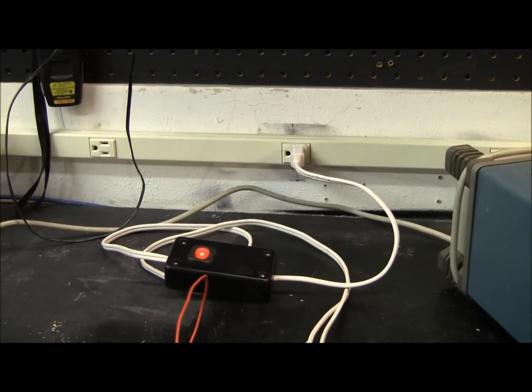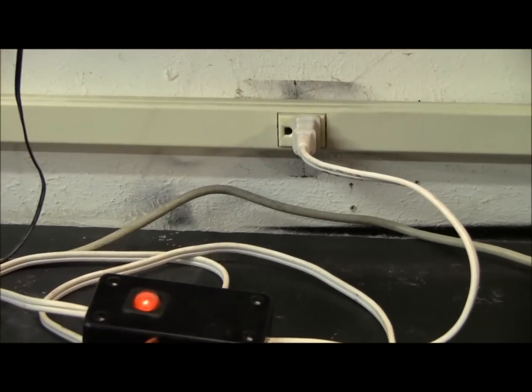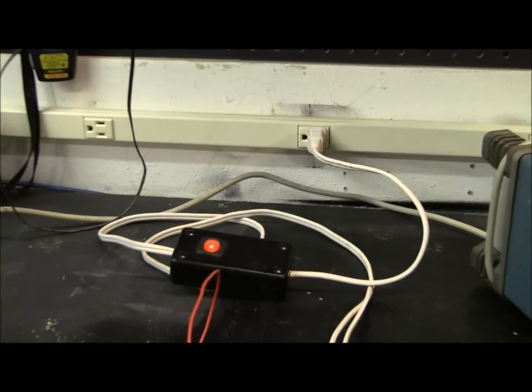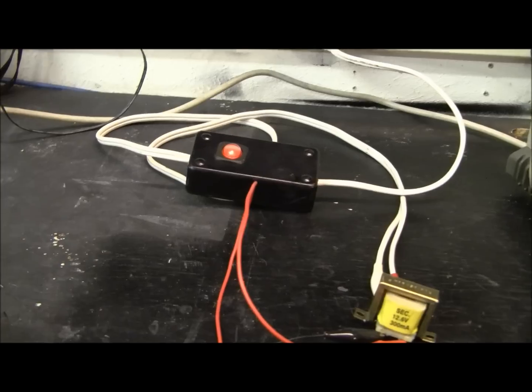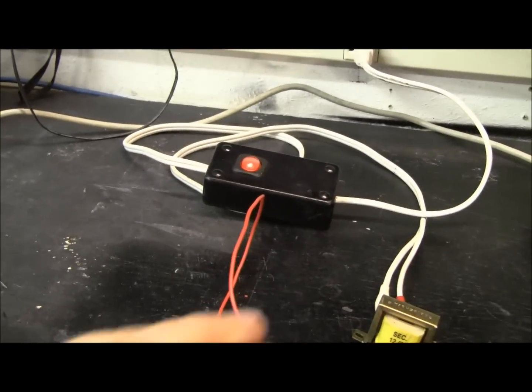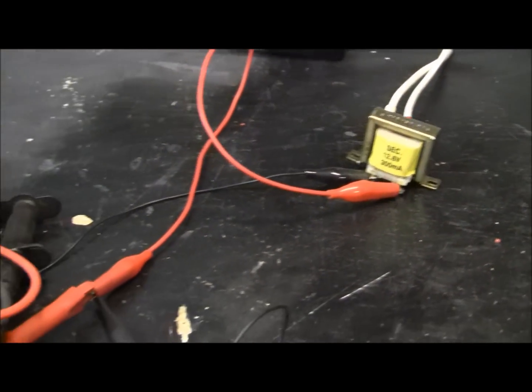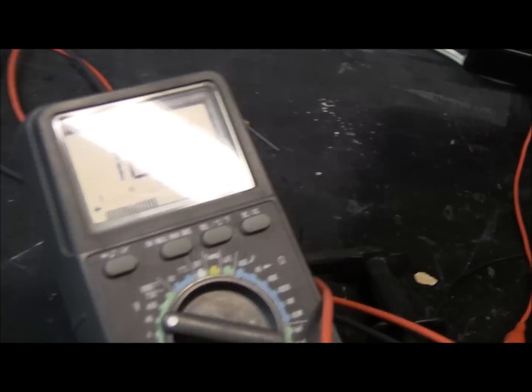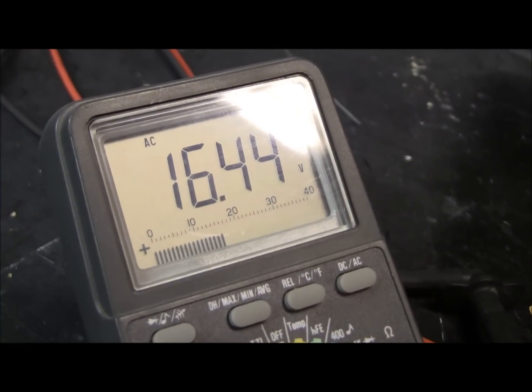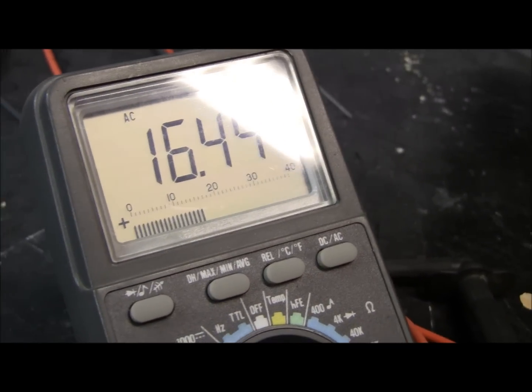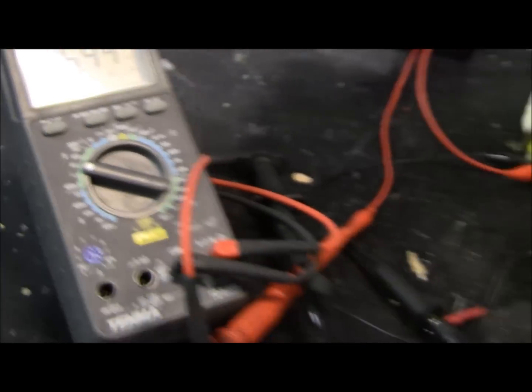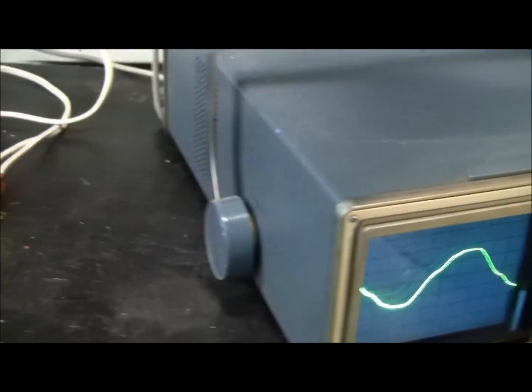For testing AC, what I've done is I've plugged into the wall with my little box here as just a switch so that I can safely kill the power. I'm going through this little transformer, because I didn't really want to have wall voltage going into my oscilloscope, and I'm getting about 16.4 volts AC. So I have that hooked up,